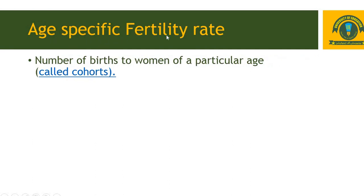Number 3 is Age-Specific Fertility Rate. This term was used under the concept of demand in unit number 3. We have seen what is fertility rate and age-specific fertility rate. The number of births to women of a particular age is called age-specific fertility rate.